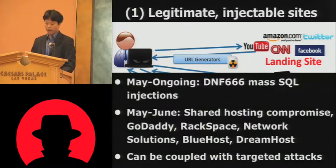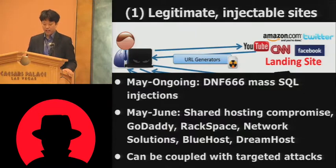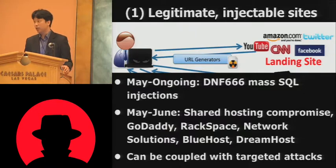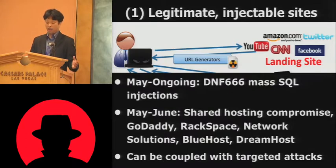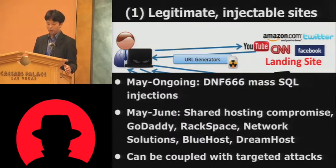The way to do that is, for example, mass SQL injections — massively using SQL injection vulnerabilities that exist in websites. In May to June, we saw mass-scale shared hosting compromise, and these included GoDaddy, Rackspace, NetworkSolutions, Bluehost, and Dreamhost. Such an attack can be coupled with targeted attacks.